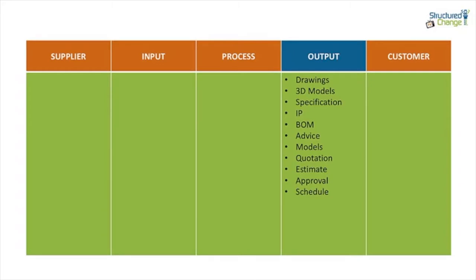We've got drawings, models, specs, intellectual property of some description, bill of materials — which is what BOM stands for — could be advice, other models. So you've got 3D models up here, or it could be calculation models. Quotations — pointing to sales. Estimates — pointing to sales or management. Approvals of some description and schedules. Just going through that output list, you get a view that suggests they've got quite a diverse range of outputs to produce.